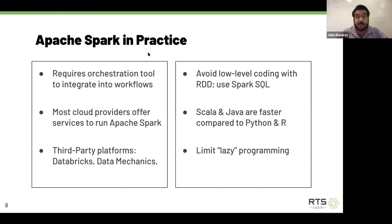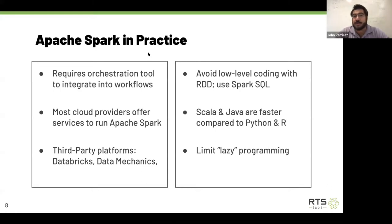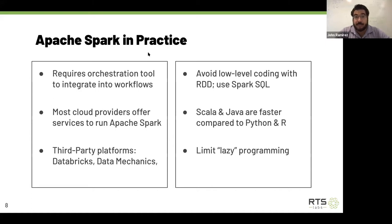Just having an Apache Spark cluster means it will just sit there unless you have a way to make data available through object storage or a file system, execute it, and put it somewhere. You need some sort of orchestration tool. Most cloud providers offer Spark but are running version 2, while the latest version 3 has better optimization, better standards for the higher APIs, and more functionality. Third-party platforms such as Databricks and Data Mechanics allow you to run newer versions.